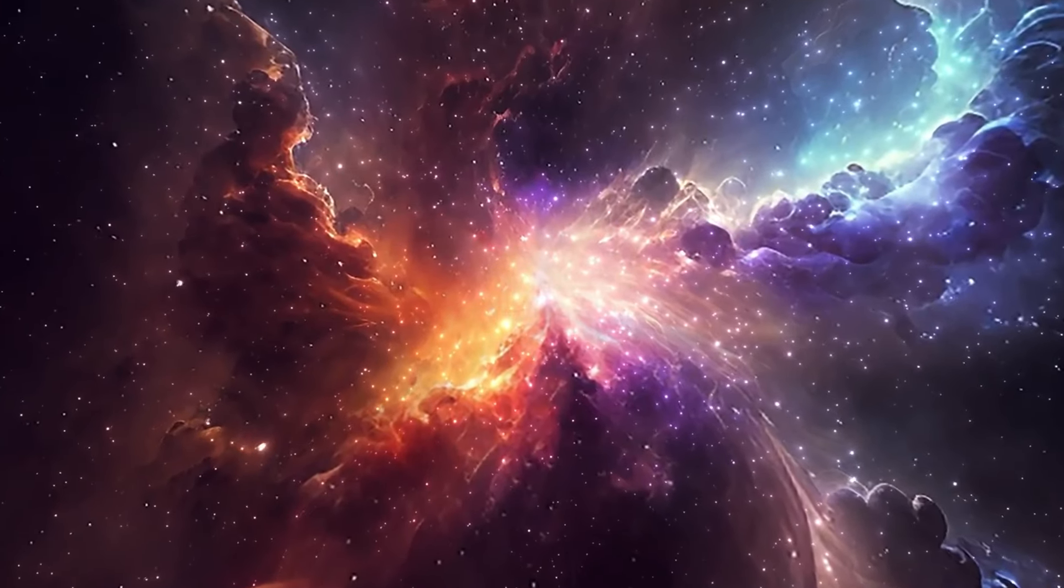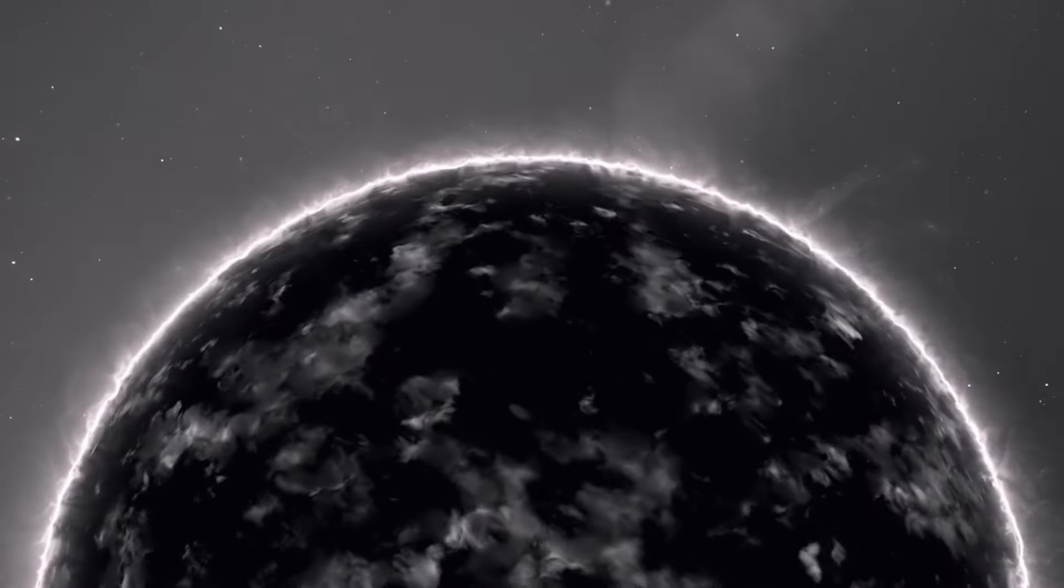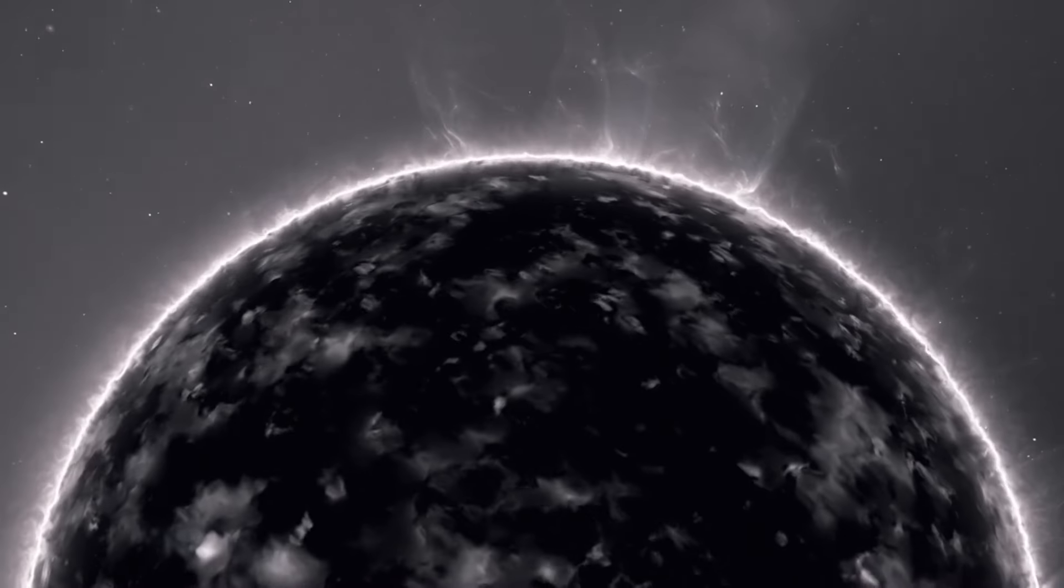In the final stages, the outer layers are ejected, creating a beautiful planetary nebula. What remains is the hot core, now a white dwarf which will gradually cool and fade over billions of years.